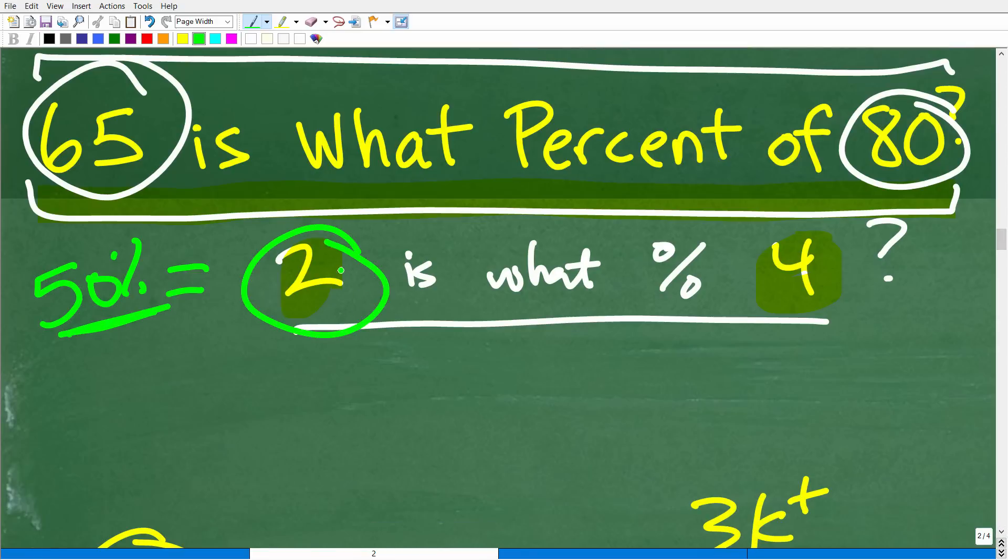Well, what we did is we took this two, okay, which is the part out of the whole, okay, which is the four. So two over four is what? That's one half, or that's the decimal 0.5. Now we have a decimal. So to go from a decimal to a percent, we multiply by 100 or move the decimal point over two places to the right. So there is our 50%.